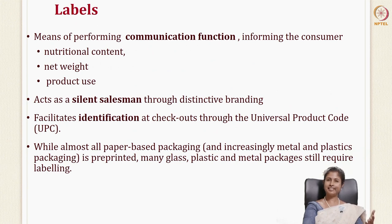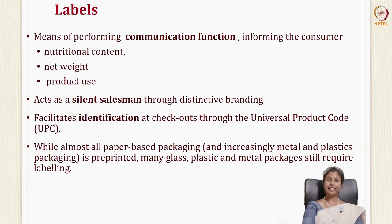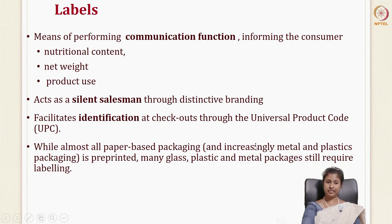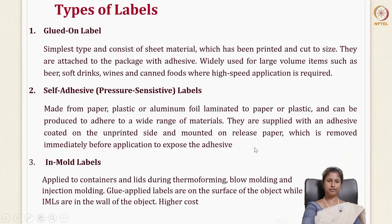The third ancillary material is labels. Labels have a number of functions in a food package. The first is the communication function — informing the consumer about the nutrition content, net weight, product use, and brand. Labels act as a silent salesman through distinctive branding and help in identification through universal product codes and barcodes. Most labels are paper-based, though metal and plastic-based labels are also available. Labels are indispensable for glass and metal packages.